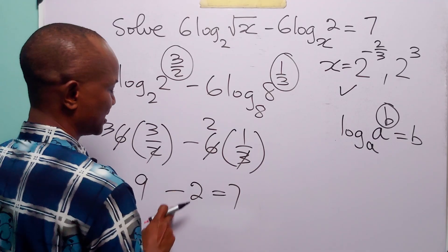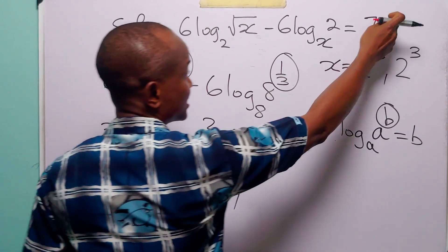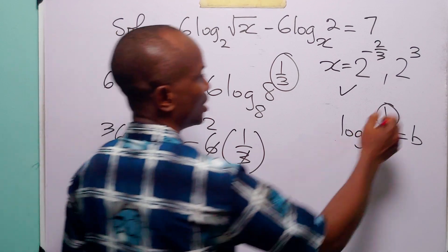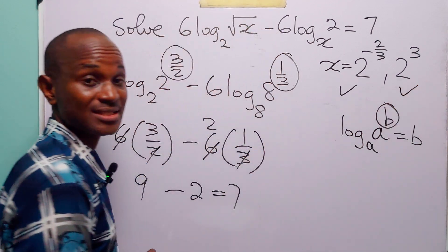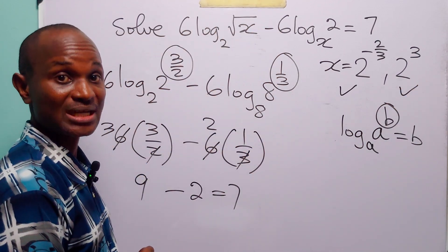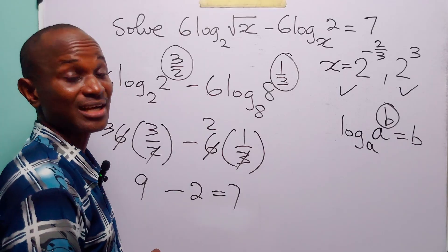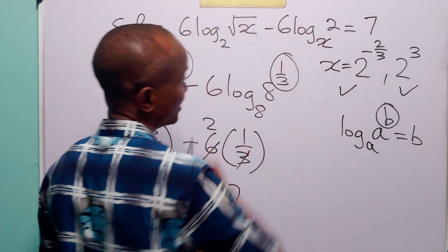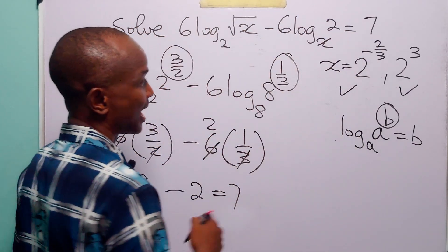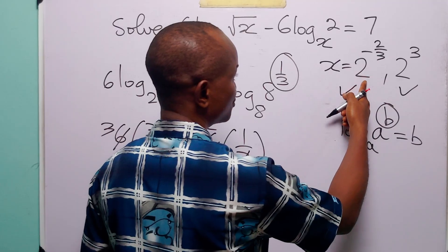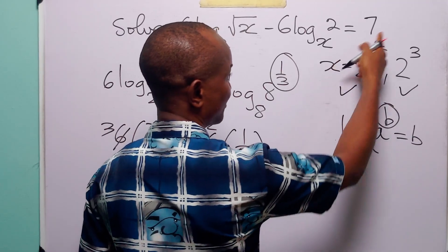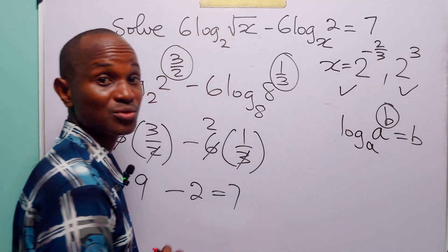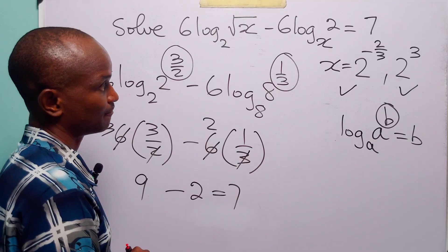Once more, the left-hand side equals the right-hand side. So this value also satisfies the original equation. Therefore, the two values of x that satisfy this logarithmic equation are x equals 2 to the power minus 2 over 3 and x equals 2 to the power 3.